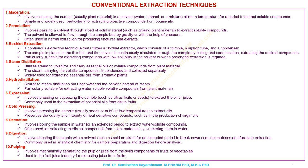Decoction involves boiling the sample in water for an extended period to extract water-soluble compounds, often used for extracting medicinal compounds from minerals by simmering them in water. Digestion involves heating the sample with a solvent, such as acid or alkali, for an extended period to break down complex matrices and facilitate extraction, commonly used in analytical chemistry for sample preparation before analysis. Pulping involves mechanically separating the pulp or juice from the solid components of fruits or vegetables, used in the fruit juice industry.